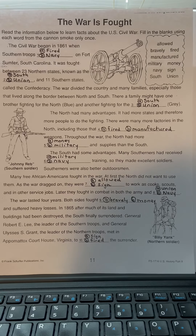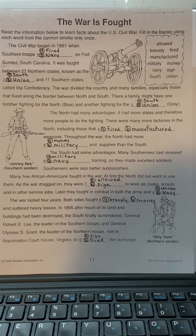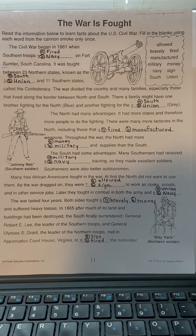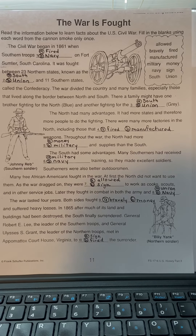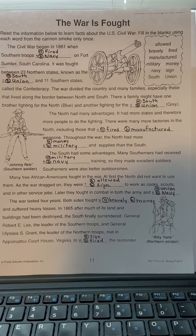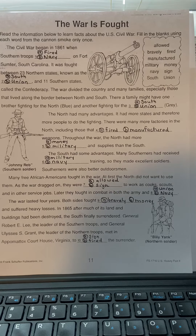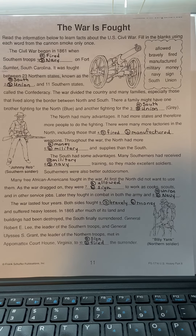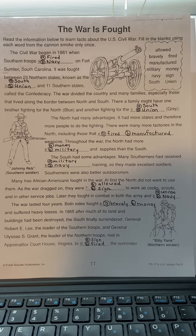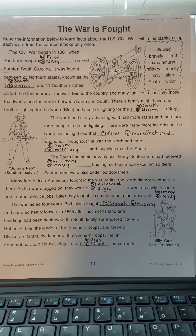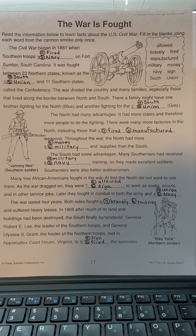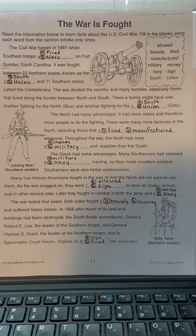The war lasted four years. Both sides fought bravely and suffered losses. In 1865, after much of its land and buildings had been destroyed, the south finally surrendered. General Robert E. Lee, the leader of the southern troops, and General Ulysses S. Grant, the leader of the northern troops, met in Appomattox Courthouse, Virginia to sign the surrender.